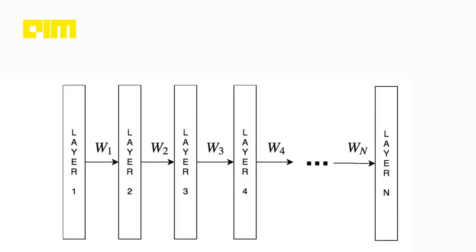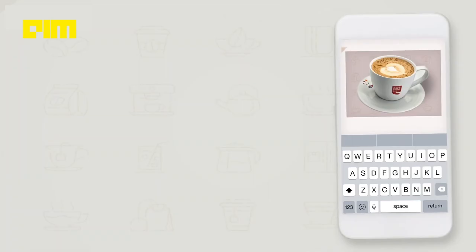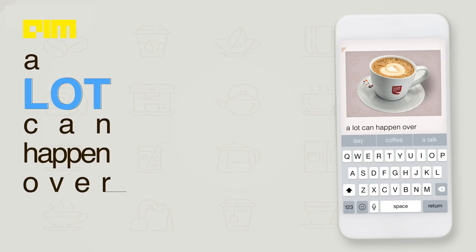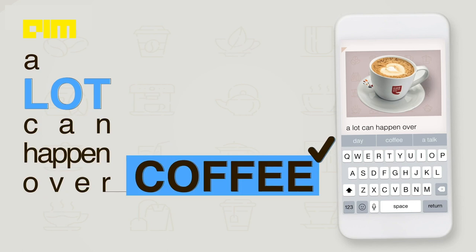LSTMs were introduced to overcome exploding and vanishing gradient problems of recurrent neural networks, or RNNs. LSTMs gave machines human-like thinking capability of remembering the most relevant information in a sequence and making it available for future use.